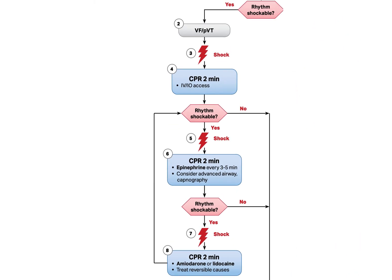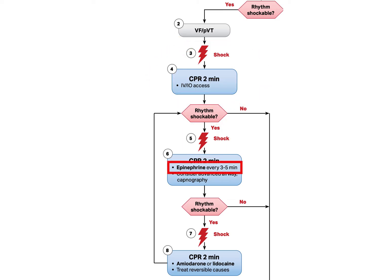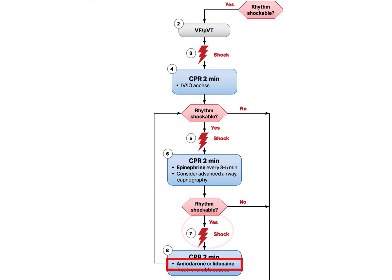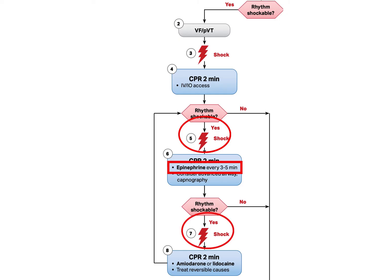Here's the rapid-fire summary for shockable rhythms: do good CPR and shock immediately, and do 2-minute cycles of CPR. Get an IV, shock, epinephrine, advanced airway, shock, amiodarone or lidocaine, shock, epi, shock, amiodarone or lidocaine, shock — and then continue CPR, shocking and giving epi every other cycle, until we aren't on this algorithm anymore.